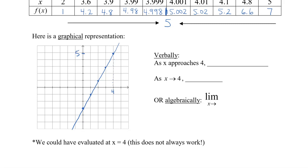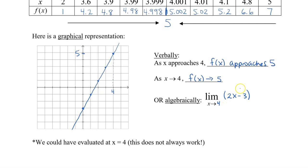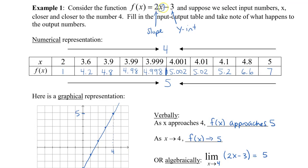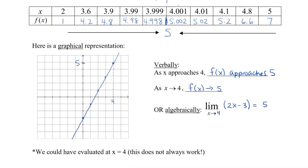What we can say verbally is: as x approaches 4, f of x approaches 5. We use an arrow to represent the word 'approach.' In formal algebraic notation, we write 'limit as x approaches 4' — the x approaching 4 is written underneath the word limit — and put the function 2x minus 3 beside it. This limit equals 5. We could have also evaluated by plugging in x equals 4: 2 times 4 minus 3 gives 5 as well. But unfortunately, direct substitution doesn't always work.